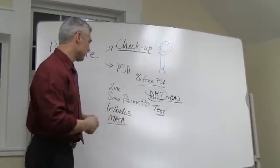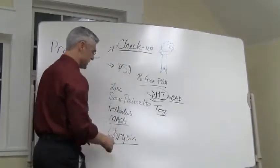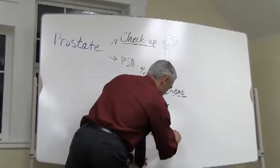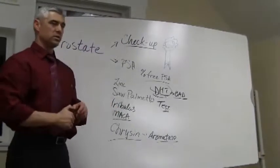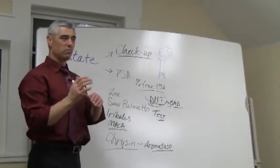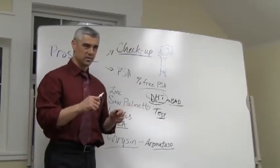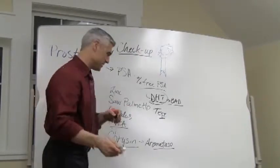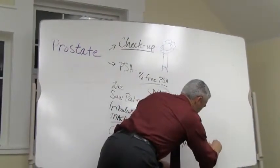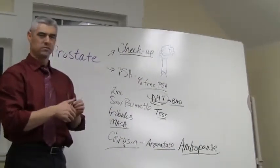Another thing to look at is something called chrysin. Chrysin is an extract that inhibits the aromatase enzyme — an enzyme released from fat cells that causes testosterone to be converted into estrogen. This estrogen dominance, where the body goes from testosterone dominance to estrogen dominance, is called andropause.